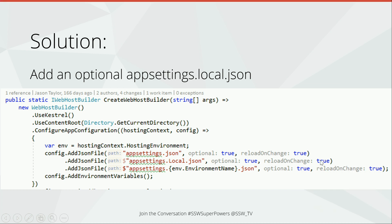In the CreateHostBuilder in program.cs, you add this line: AddJsonFile("appsettings.local.json", optional: true, reloadOnChange: true). In the stream of files to apply settings from, you've just added one extra file. The second step is to set your .gitignore to not check that local file in. So now you've got a file on your computer where you can override any setting you like and it won't get checked in to source code. You can have per-user config, and still have environment-level settings going on as well.